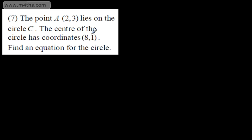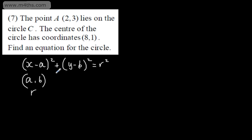In question 7, we're told the point lies on the circle C. The center of the circle has coordinates, and we need to find an equation for the circle. We can write the equation of the circle in the form x minus a, all squared, plus y minus b, all squared, is equal to r squared. This gives us a circle with center a comma b and a radius of r units. This is what we looked at in the last video.